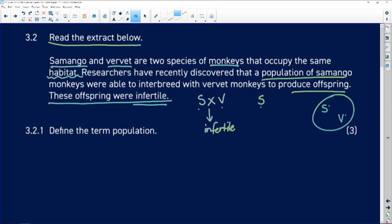Samango monkeys mating with Samango monkeys are going to produce viable or fertile offspring. Vervet monkeys mating with vervet monkeys are going to produce fertile vervet monkey babies. So our question is, define the term population.